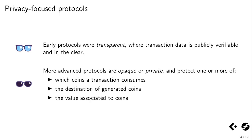As Aram mentioned, a lot of early protocols like Bitcoin were transparent, where the transaction data was typically publicly verifiable and in the clear. But there's risk involved in that. More advanced and recent protocols are what we might call opaque or private. While being publicly verifiable, they still try to protect one or more parts of the transaction, like the value associated to the coins involved, the destination of newly generated coins, and which coins are being consumed in the transaction.